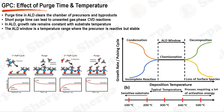In the ALD process, growth per cycle, GPC, is significantly influenced by purge time and substrate temperature. The purge time is the period during which the reactor chamber is cleared of any remaining precursor molecules and reaction byproducts before the next precursor is introduced. If the purge time is too short, remnants of the precursor may linger in the chamber and participate in unintended chemical reactions, leading to pseudo-CVD or gas-phase CVD reactions, which result in non-uniform film growth. Meanwhile, substrate temperature plays a crucial role in determining the growth rate, and in an ideal ALD process, the growth rate remains constant with respect to substrate temperature.